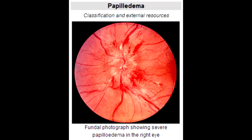What is papilledema? Papilledema is optic disc swelling, and this usually happens bilaterally due to an increase in intraocular pressure. Papilledema can also happen secondary to mass effect.